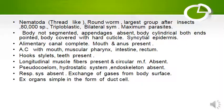Nematoda, also known as thread-like animals, these are round worms — the largest group after insects. More than 80,000 species are known. These are triploblastic, bilaterally symmetrical, and the maximum number are parasites.